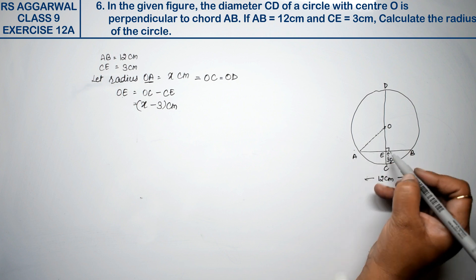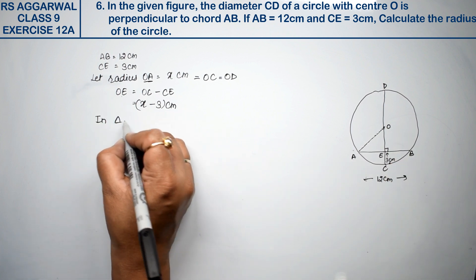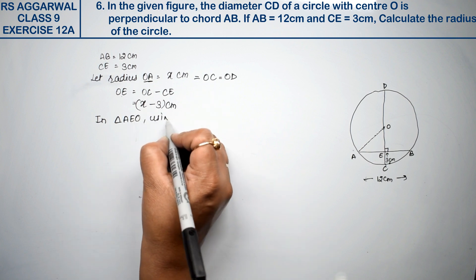Now, we must look at triangle AEO. We need to look at triangle AEO to find the value of x. In triangle AEO, right friends, we need to use Pythagoras theorem.